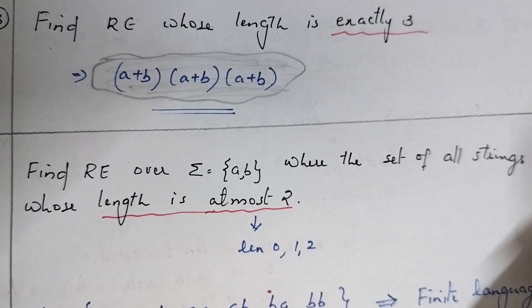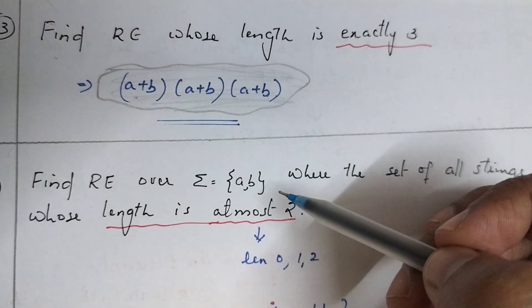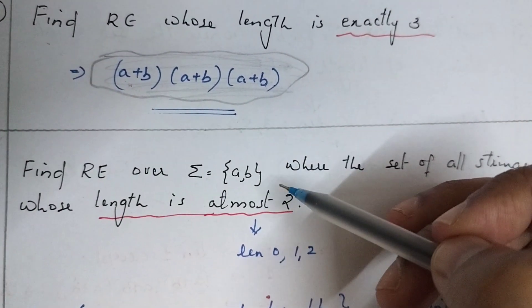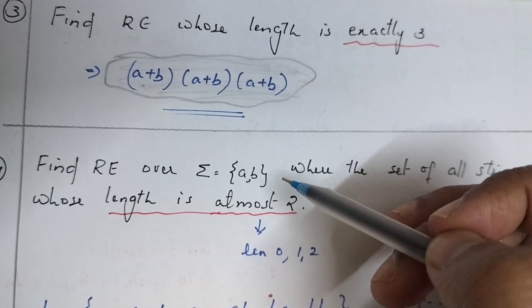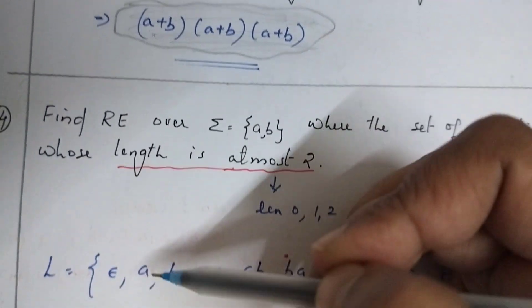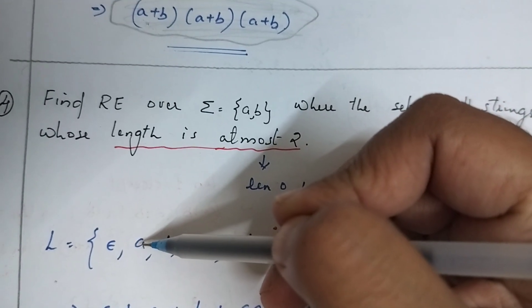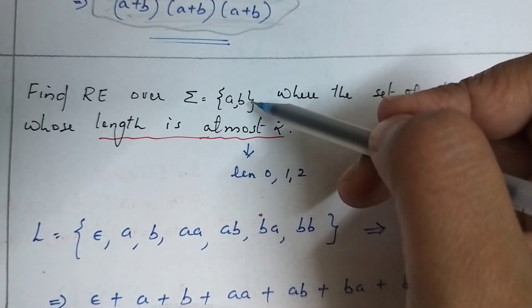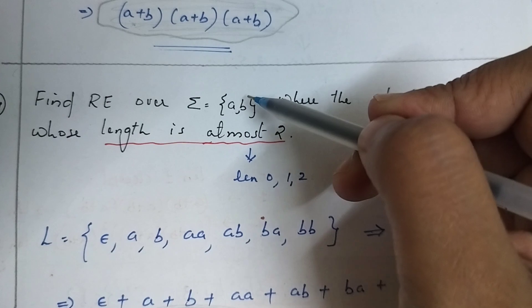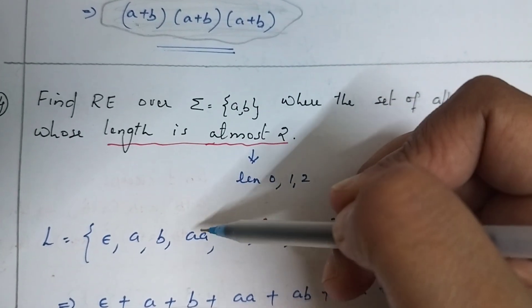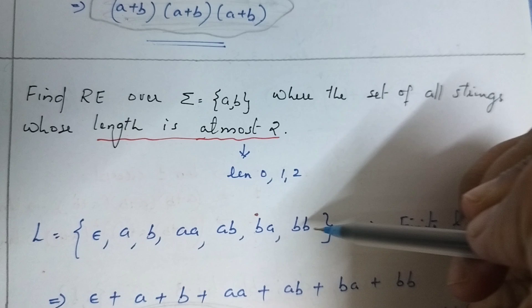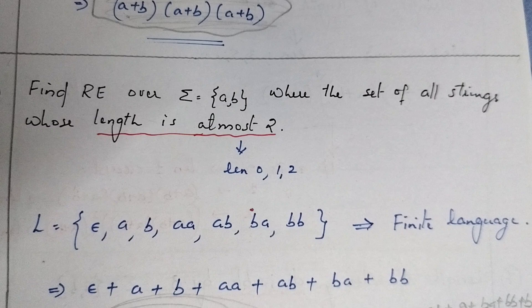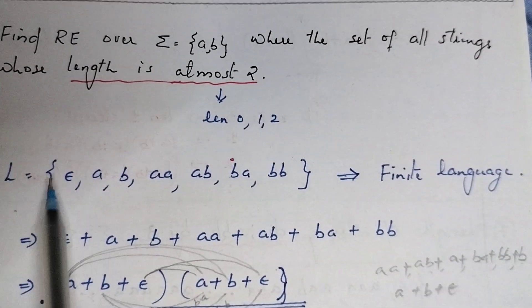What about at most 2 over input alphabet {a, b}? At most 2 means the maximum length is 2, so length will be 0, 1, or 2. Length 0 means epsilon; length 1 means a or b; length 2 means aa, ab, ba, bb. So this is a finite language, and we can perform the union of all strings in the finite language to find the regular expression.